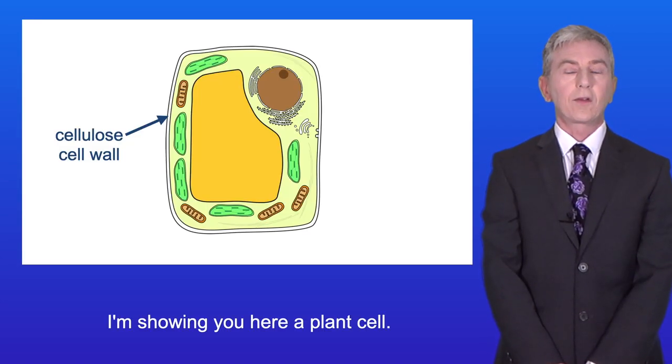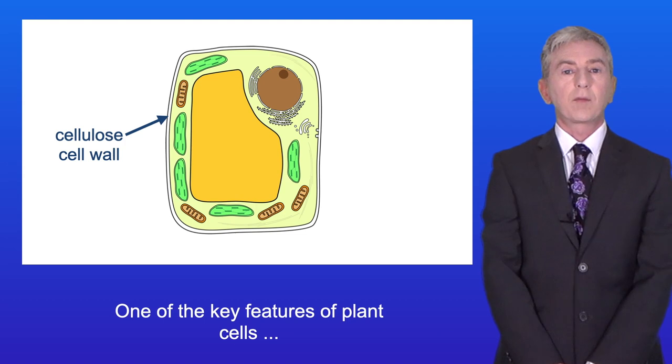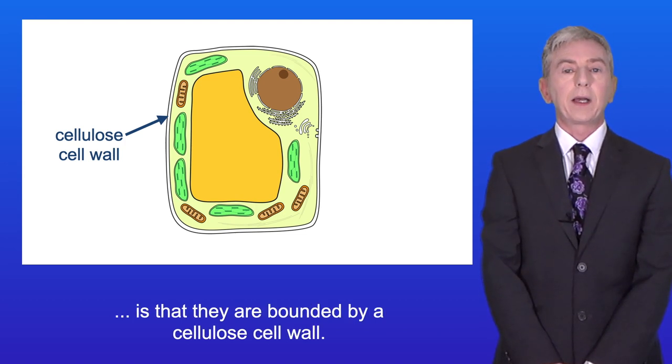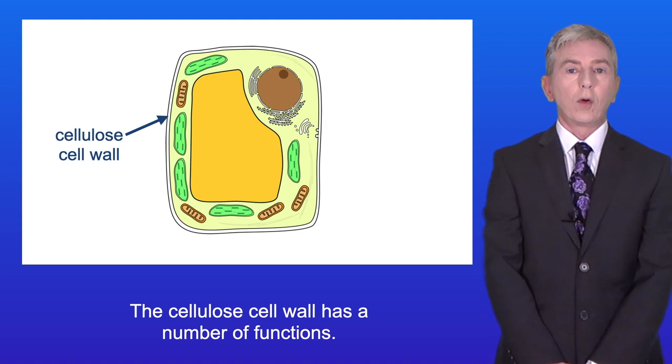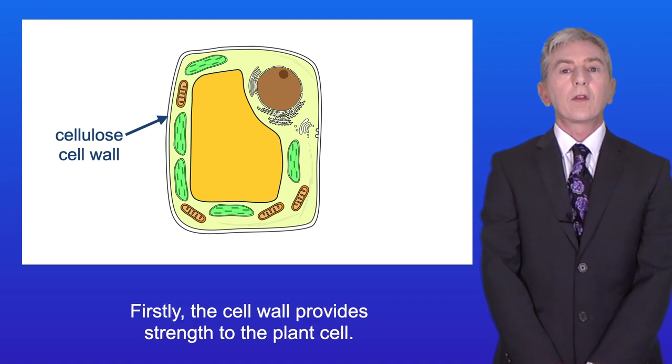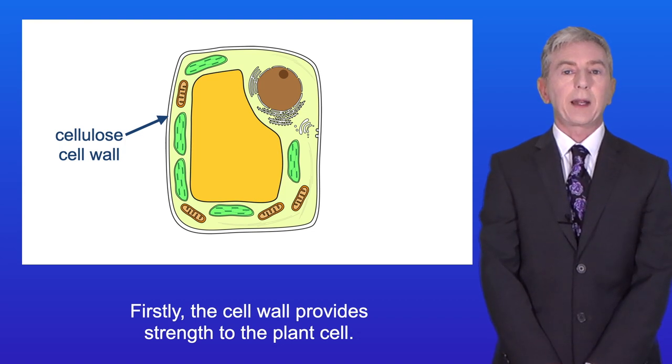I'm showing you here a plant cell and one of the key features of plant cells is that they're bounded by a cellulose cell wall. Now the cellulose cell wall has a number of functions. Firstly, the cell wall provides strength to the plant cell.